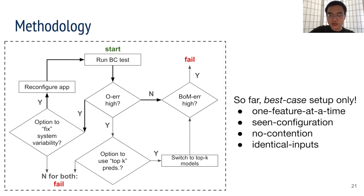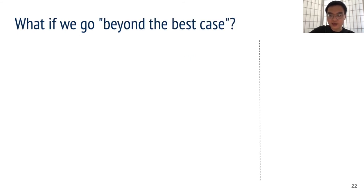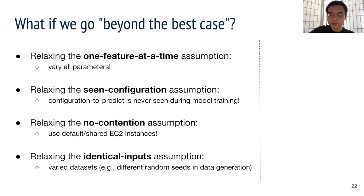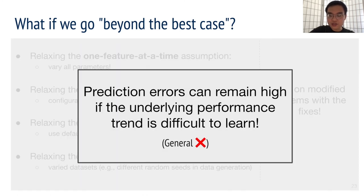But so far everything has been under the best-case assumptions. Now, what if we remove the best-case assumptions? Here's how we go beyond the best-case setup. We relax the four assumptions described previously and repeat experiments on modified systems. Due to time limit, we will skip the detailed results in the paper, but the high-level finding is that there are performance trends hard to predict. So even when we forfeit the generality requirement and apply the system fixes, the BoM errors can still be high. How to address this will lead to future exploration.